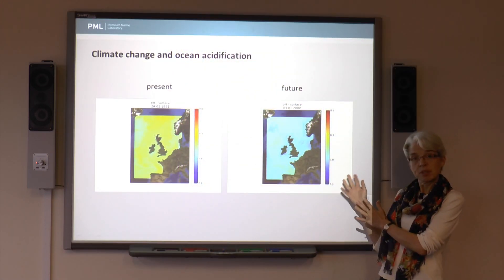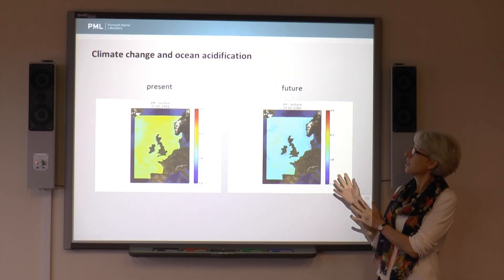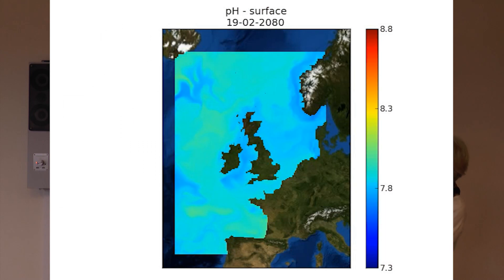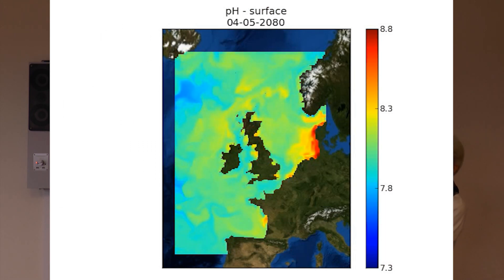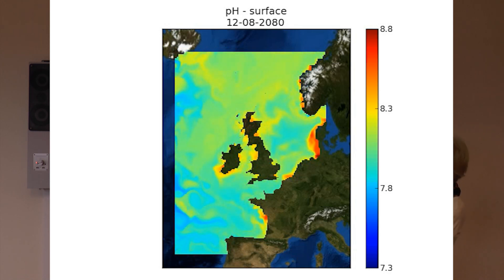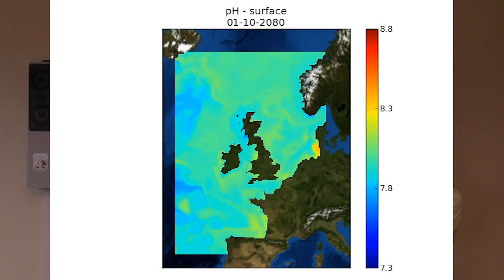And that's the present day — we can see the seasonal changes and so on. We can see the same in the future. So 100 years later in 2080, we've still got seasonal changes on the same scale, and yet everything's looking a lot bluer — the ocean is much more acidic. So that would tell us something about what the future might hold.